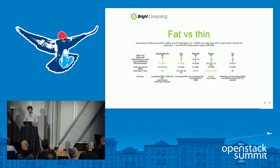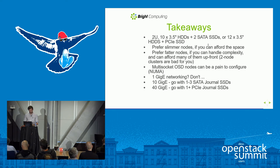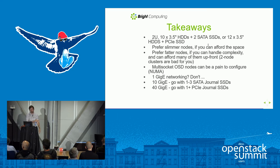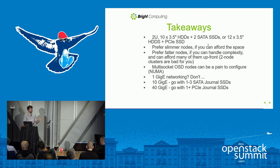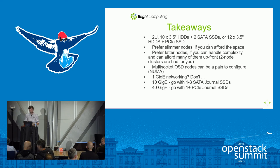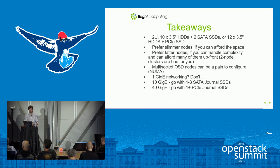To summarize the key takeaways: go with a 2U chassis for your OSD nodes with 10-12 three-and-a-half-inch HDDs and two SSDs; alternatively with a taller chassis, 16 HDDs and three SSDs, or one PCIe NVMe instead of three SSDs. Prefer thinner nodes if you can afford the additional cost and rack space — it's simpler to manage when getting started.